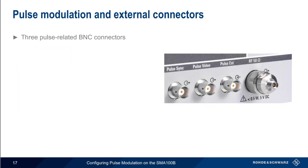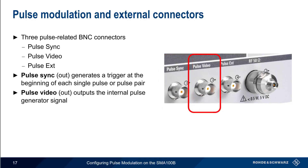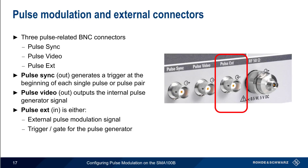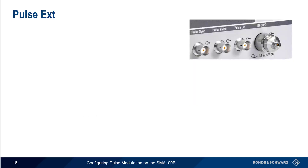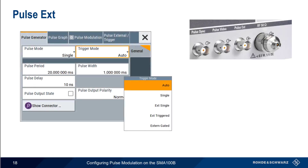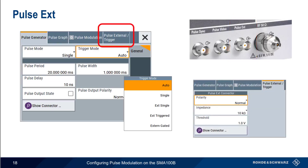On both versions of the SMA-100B, there are three BNC connectors related to pulse modulation – Pulse Sync, Pulse Video, and Pulse External. Pulse Sync generates a trigger signal at the beginning of each single pulse or pulse pair. Pulse Video outputs the internal pulse generator signal. Pulse External has two purposes – it can take the input of an external pulse modulator, or receive an external trigger/gate signal. Pulse External is probably the most important of these three connectors. If we need to change the electrical properties of the input connector, such as the threshold voltage, this can be done via the Pulse External trigger menu.